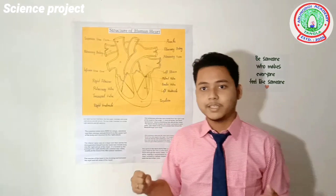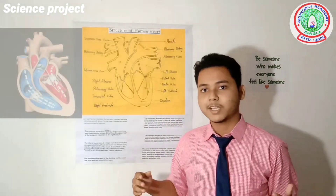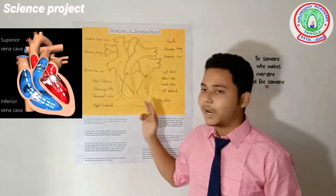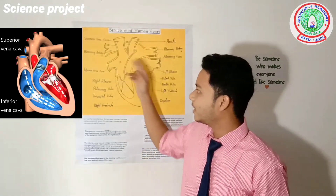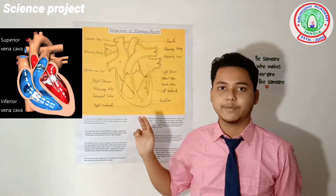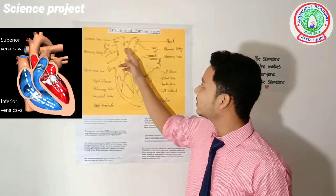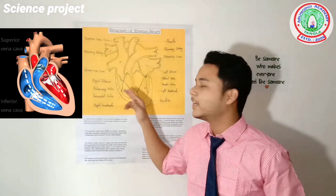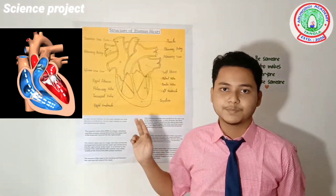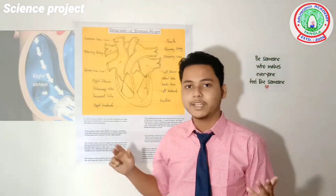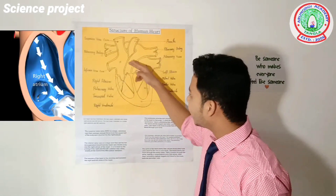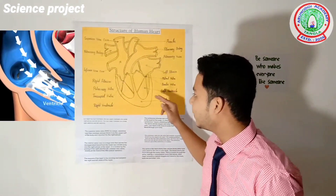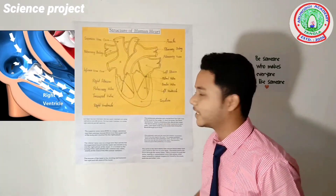The deoxygenated blood enters into the right atrium of the heart through the superior vena cava and inferior vena cava. The superior vena cava brings deoxygenated blood from the upper body and the inferior vena cava from the lower body. After that, the deoxygenated blood passes through the tricuspid valve into the right ventricle.